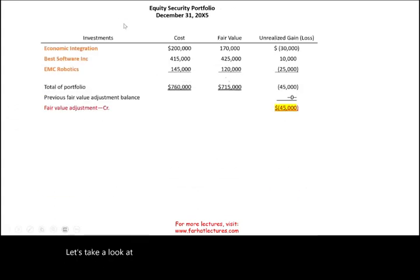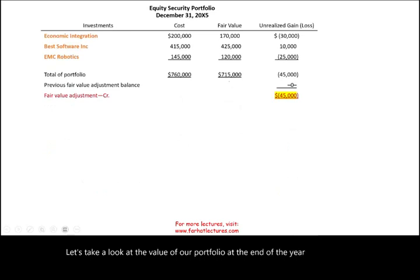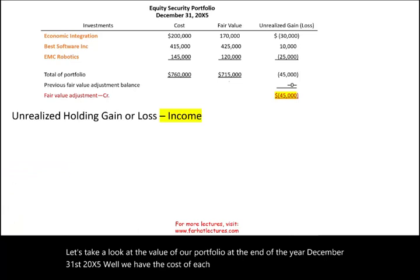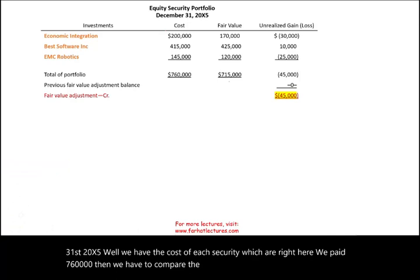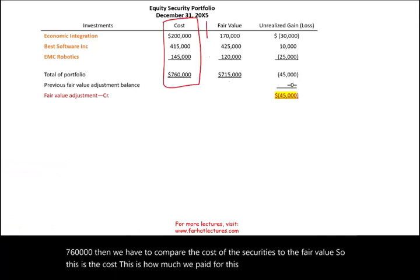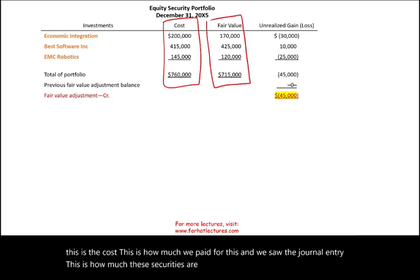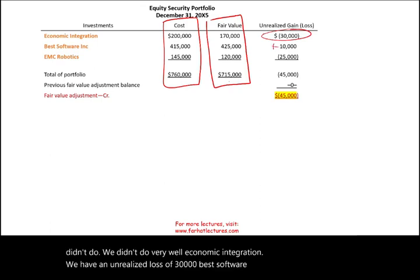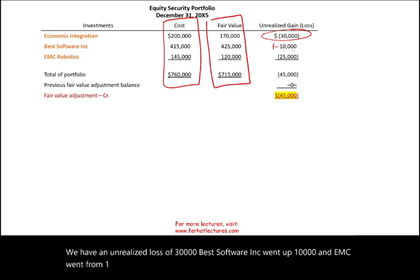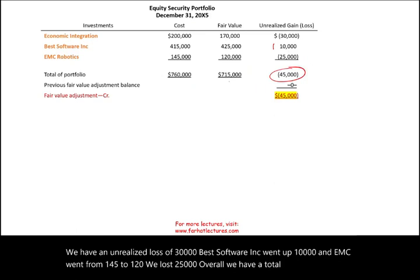Let's take a look at the value of our portfolio at the end of the year, December 31st, 20X5. We paid $760,000 total. We compare cost to fair value. Economic Integration has an unrealized loss of $30,000. Best Software Inc. went up $10,000. EMC went from $145,000 to $120,000 — a loss of $25,000. Overall, we have a total loss of $45,000 in our portfolio. This is a year-one portfolio adjustment, so we have no previous fair value adjustment.